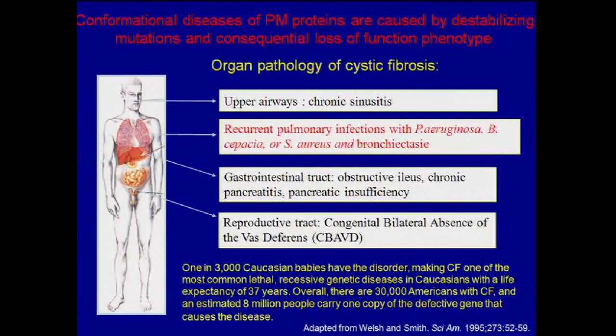Cystic fibrosis is caused by mutation in CFTR, which is a chloride channel ensuring transepithelial chloride and water movement in all the organs indicated on the slides. When the channel is impaired, there is a dehydration of the luminal content of all these organs, with severe consequences for all the organs' functionality.